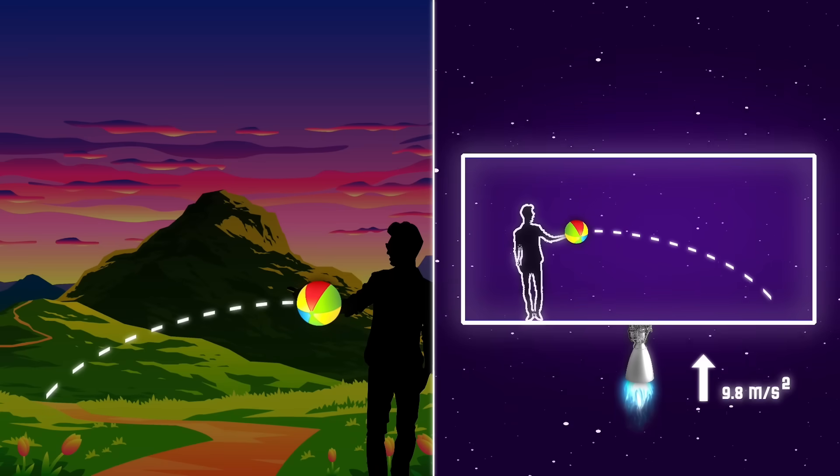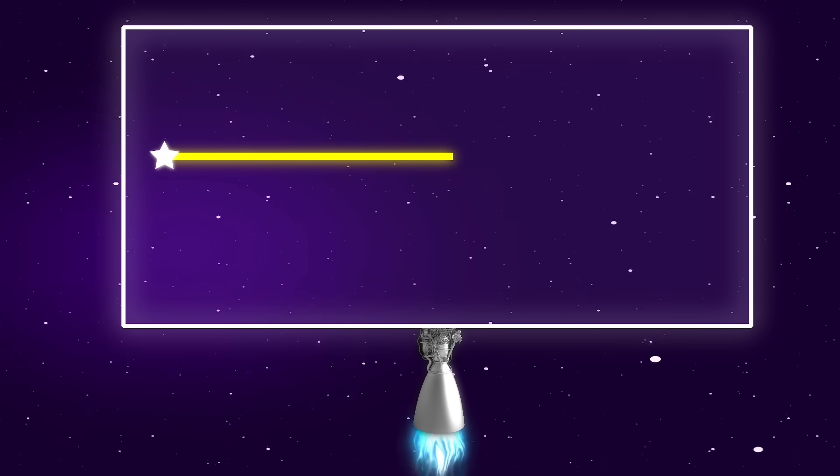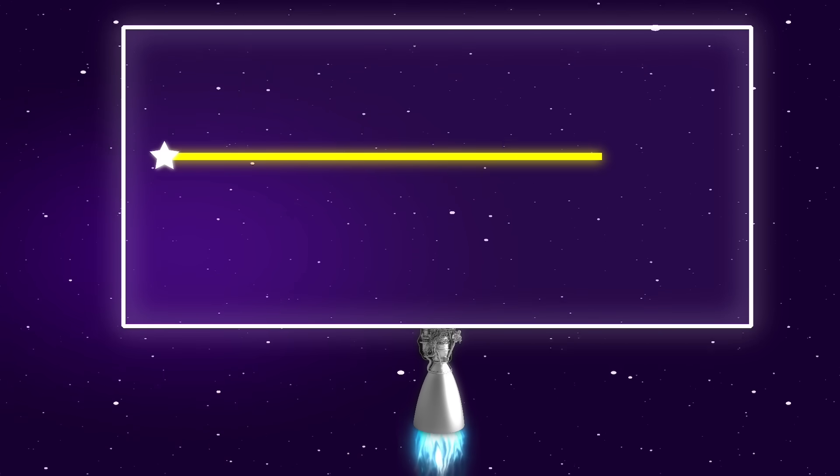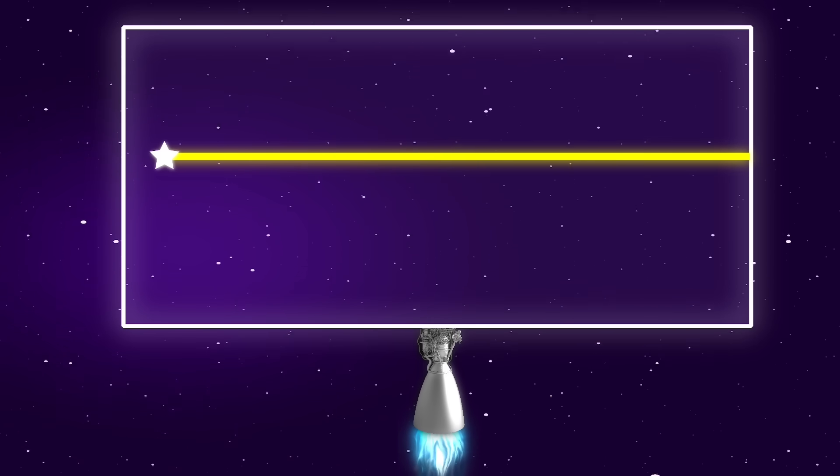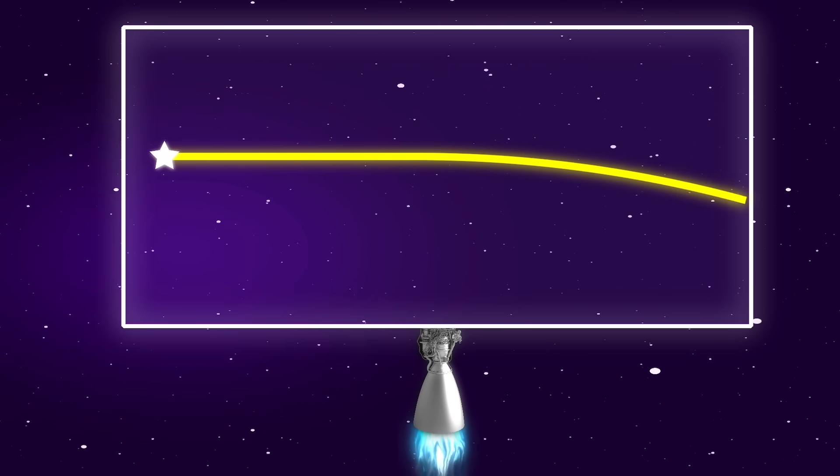If you throw a ball on the Earth, it will travel in a curved path and then fall to the ground. If the ball is thrown from an acceleration lift in space, it will also travel in a curved path. Does that mean light itself will be able to bend? Can light be bent even though it has no mass and always moves in a straight line? Einstein says it will bend.